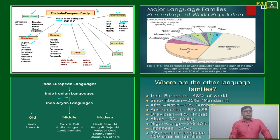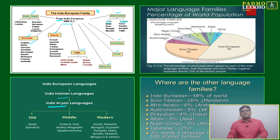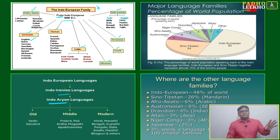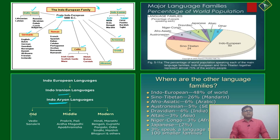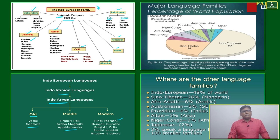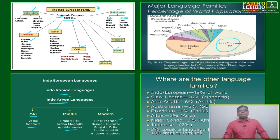Indo-Iranian further divided into Indic and Iranian. The picture is complex but the idea is to grasp the overall development. Indo-Iranian had a branch called Indo-Aryan. In Indo-Aryan, the old form was Vedic Sanskrit, the middle period had Prakrit, Pali, and Ardhamagadhi, and after that many modern languages developed — Hindi, Marathi, Bengali, Gujarati, Punjabi, Odia, Sindhi, Maithili, Bhojpuri, and others. All are coming from Indo-Aryan, which comes from Indo-Iranian, which comes from the Indo-European family.